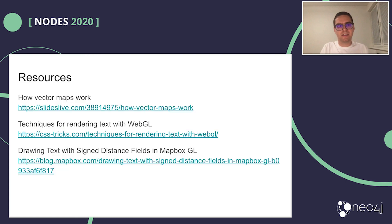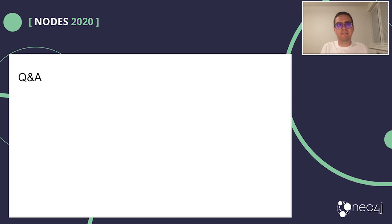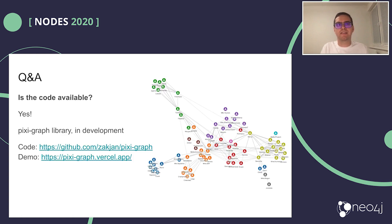Going back to the slides, here is a list of very interesting resources. If you are wondering how WebGL works for 2D rendering, you can take a look at them. Now it's time for a quick Q&A session. Is the code of the demo available? Yes — I published the source code in my PixieGraph repository with a demo deployed online, and the goal is to publish the repository as an NPM library one day when it's reasonably finished.